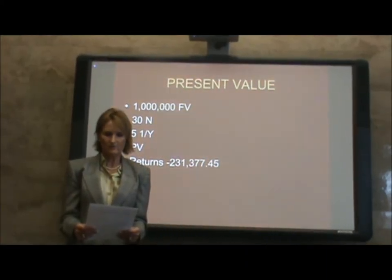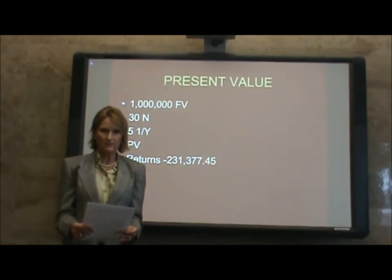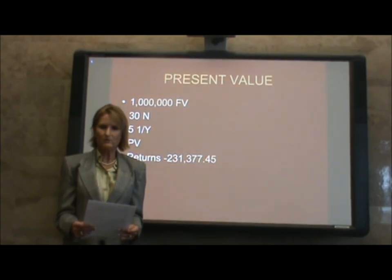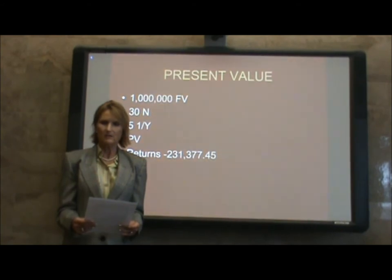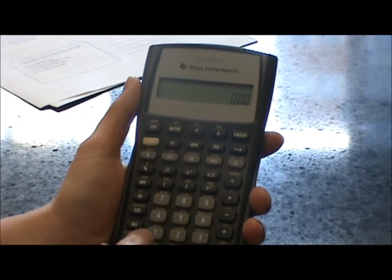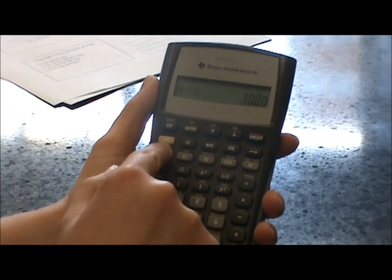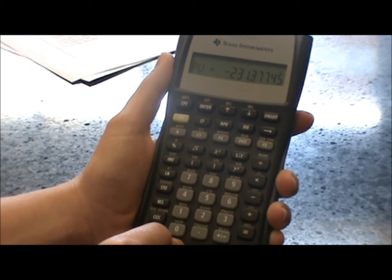In this part of the lesson, we are going to use the BA-2 Financial Calculator to figure the present value of a single sum using annual compounding. Let's say that you would like to retire in 30 years as a millionaire. How much will you need to invest today — what is the present value of what you need to invest now to receive $1 million in 30 years at 5%? To compute this, enter 1 million and press the FV future value key. Enter 30 and press N for number of periods. Enter 5 and press I over Y for the interest rate per year. Then press the compute key, then press PV for present value. The answer is $231,377.45. Note the negative sign — this represents the cash outflow necessary now to receive the $1 million in 30 years.